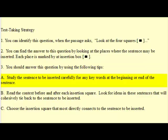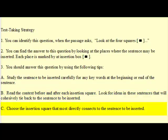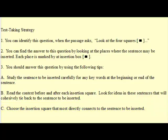a. Study the sentence to be inserted carefully for any key words at the beginning or end of the sentence. b. Read the context before and after each insertion square. Look for ideas in these sentences that will cohesively tie back to the sentence to be inserted. c. Choose the insertion square that most directly connects the sentence to be inserted.